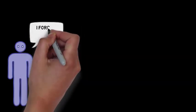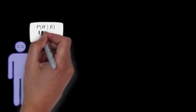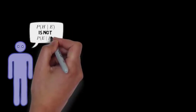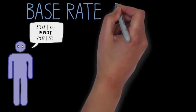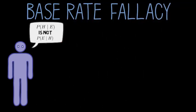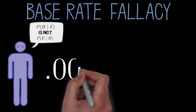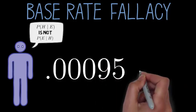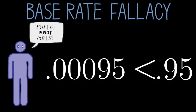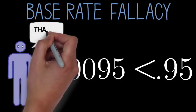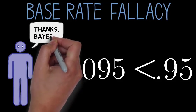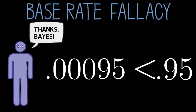Bayes' theorem is very helpful because in figuring out what to make of some new piece of evidence, people often ignore the prior probability of the hypothesis, or treat p of h given e as p of e given h. This mistake is sometimes known as the base rate fallacy. In the case we just looked at, p of h given e is very different from p of e given h — one is less than 1 tenth of a percent, and the other is 95%. Without Bayes' theorem, you might have gotten a lot more worked up about hypothesitis than you needed to be.